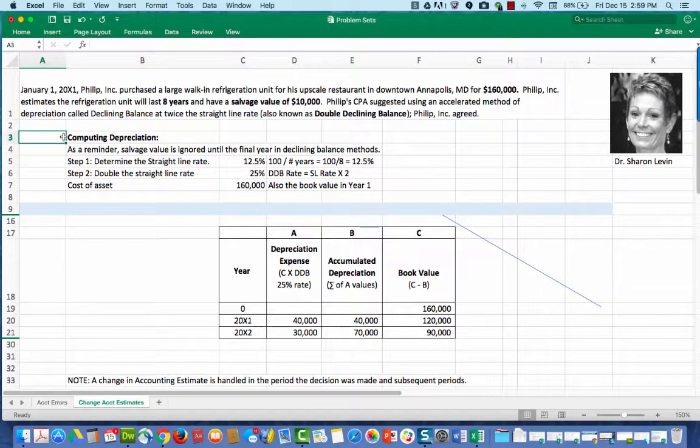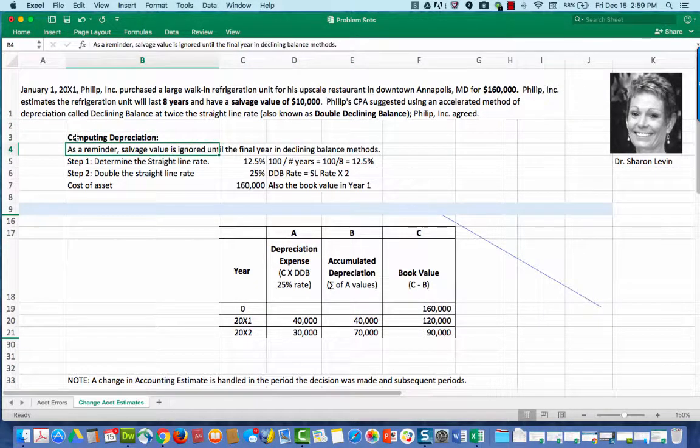First, let's start to compute the depreciation. As a reminder, when using the double declining balance method of depreciation, salvage value is ignored in the computation of depreciation until the last year.